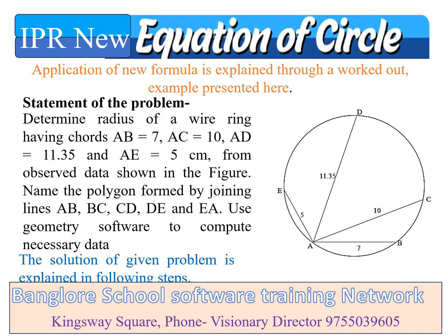Application of the new formula is explained through a worked-out example. Statement of the problem: determine the radius of a wire ring having chords AB = 7, AC = 10, AD = 11.35, and AE = 5 cm from observed data shown in the figure. Name the polygon formed by joining lines AB, BC, CD, DE and EA.